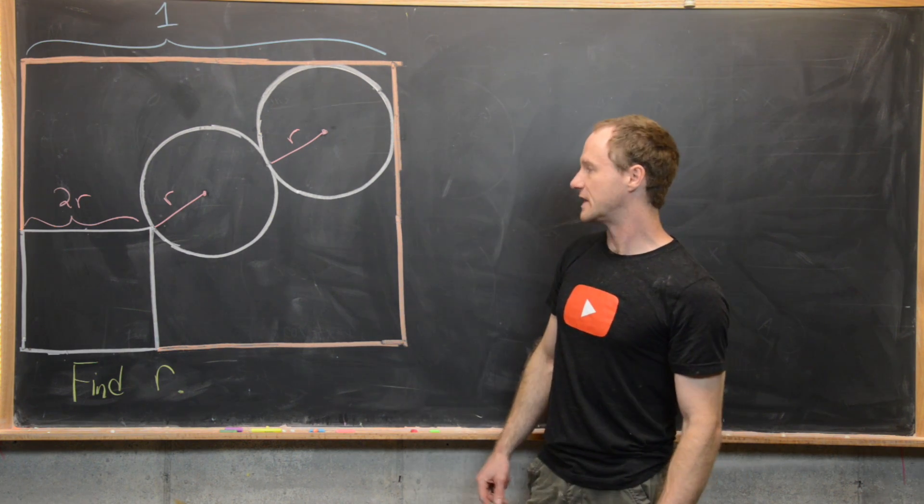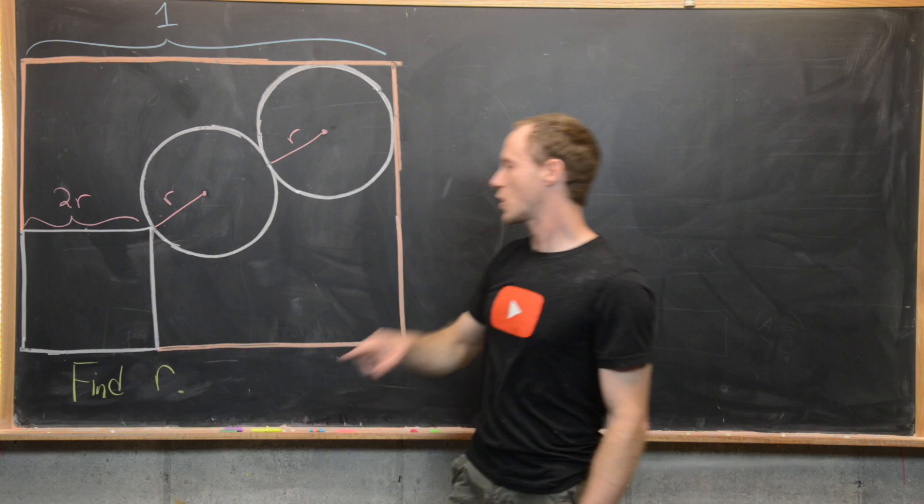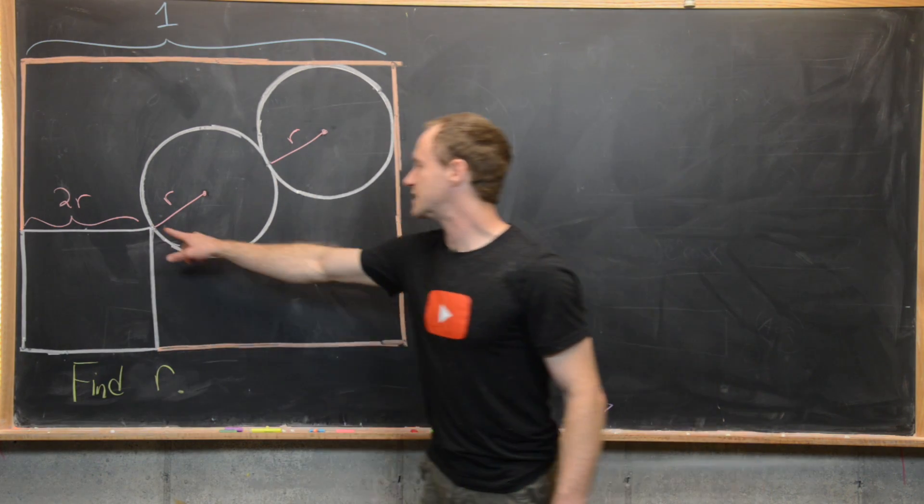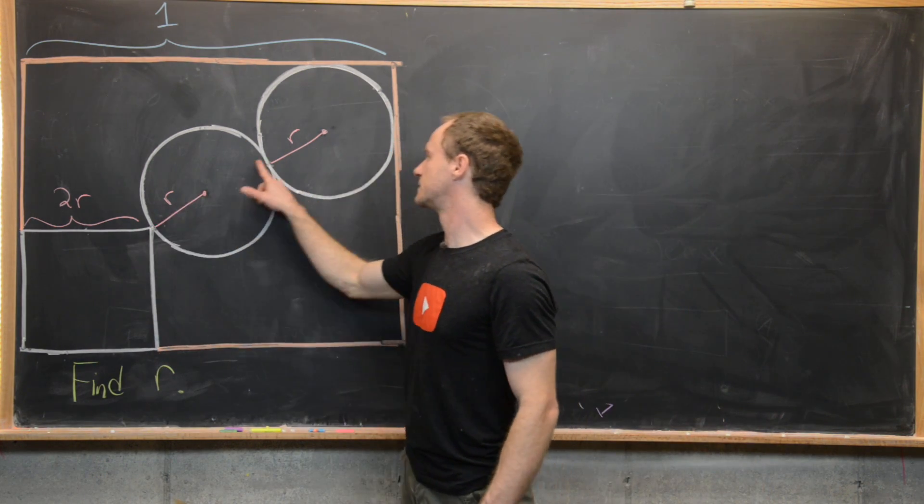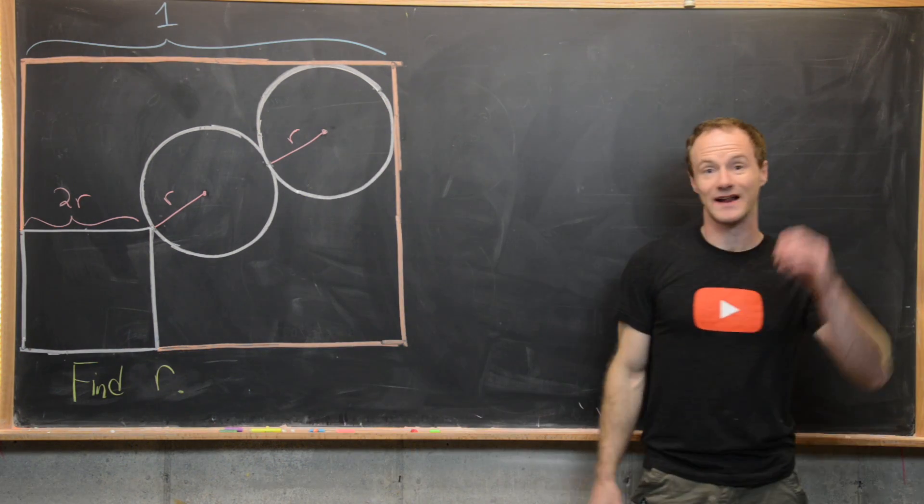In fact, they're oriented so that the diagonal of this large square coincides with the diagonal of this small square and then two diameters of each of these circles. And our goal is to find r.